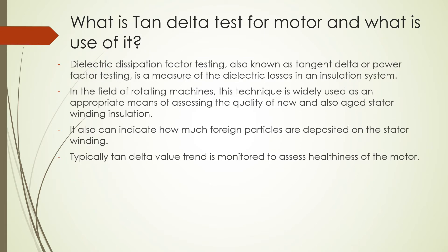The fifth question: what is the tan delta test for a motor and what is its use? Dielectric dissipation factor testing, also known as tangent delta or power factor testing, is a measure of dielectric losses in an insulation system. In the field of rotating machines, this technique is widely used to assess the quality of new and aged stator winding insulation. It can also indicate how much foreign particles have deposited on the stator winding. Typically, the tan delta value trend is monitored to assess the healthiness of the motor.